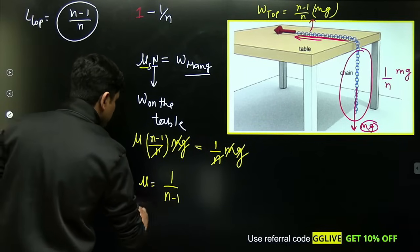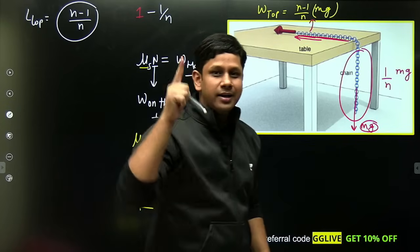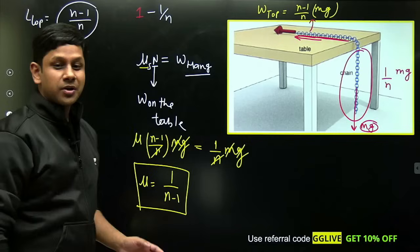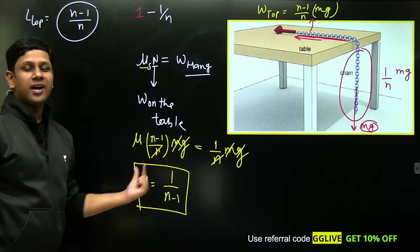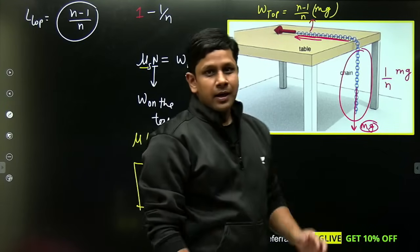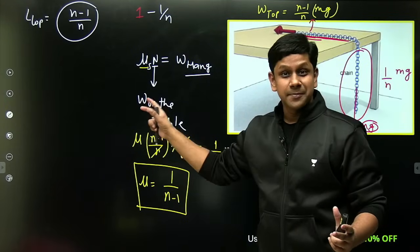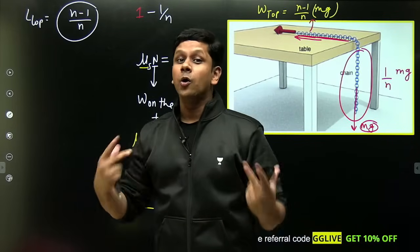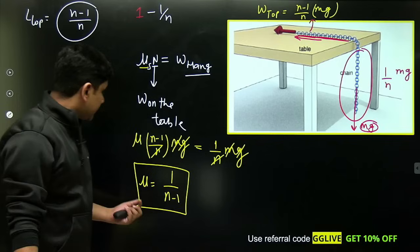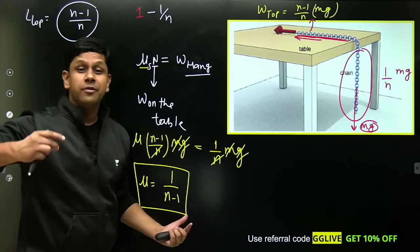And if next time you find this question in NEET, same question, similar question with different values, then the simple solution will be: μ = 1/(n-1), that's it. This is simplification at its best. And yes, I didn't skip basic concepts, I showed you what happens, how we calculate everything, I explained everything. But if you remember this formula that coefficient of static friction is 1/(n-1), it will save a lot of time.